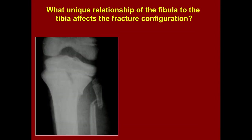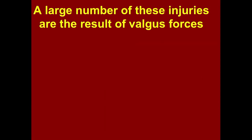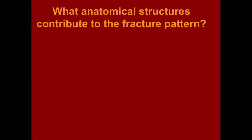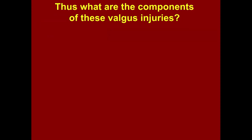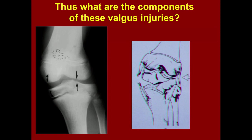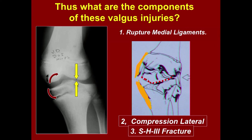For the valgus injury — why does a Salter-Harris II fracture occur? What's the unique relationship of the fibula? The fragment usually goes anterolateral, with the other going posteromedial. These result from valgus forces. The fibula resists compressive forces in a valgus injury, but tension forces are still applied medially — so you commonly see rupture of the medial collateral ligament and lateral compression giving a Salter-Harris III fracture pattern.